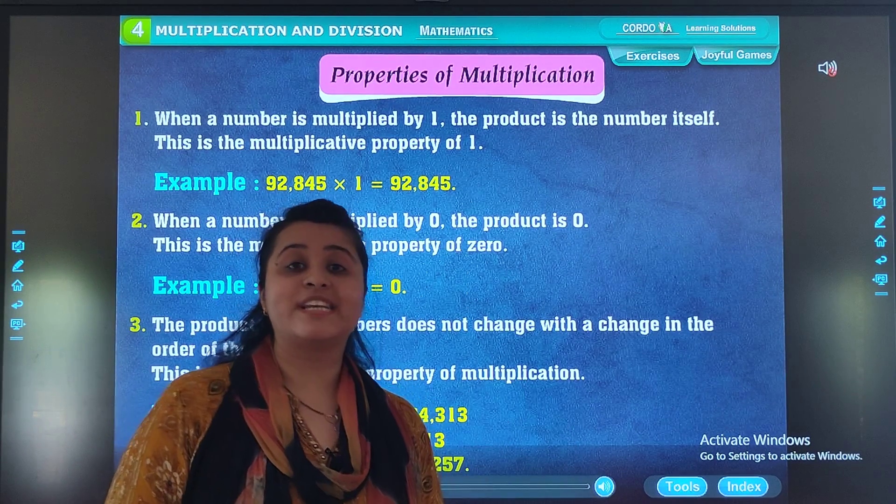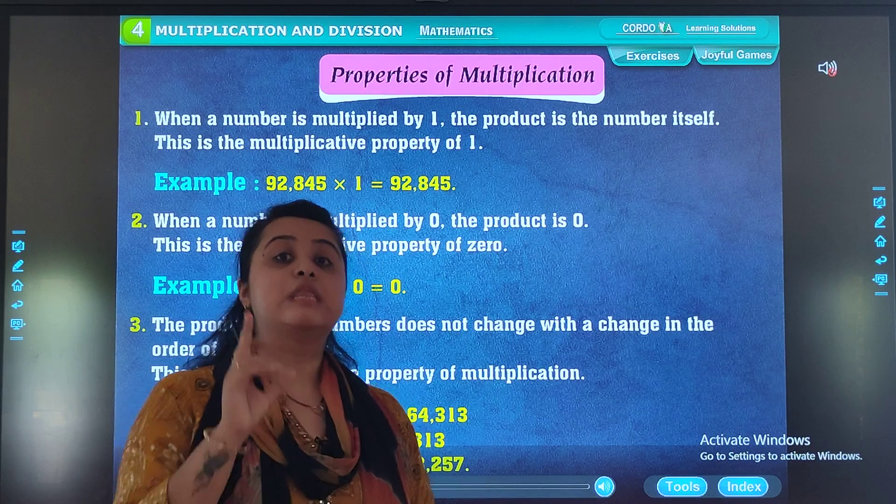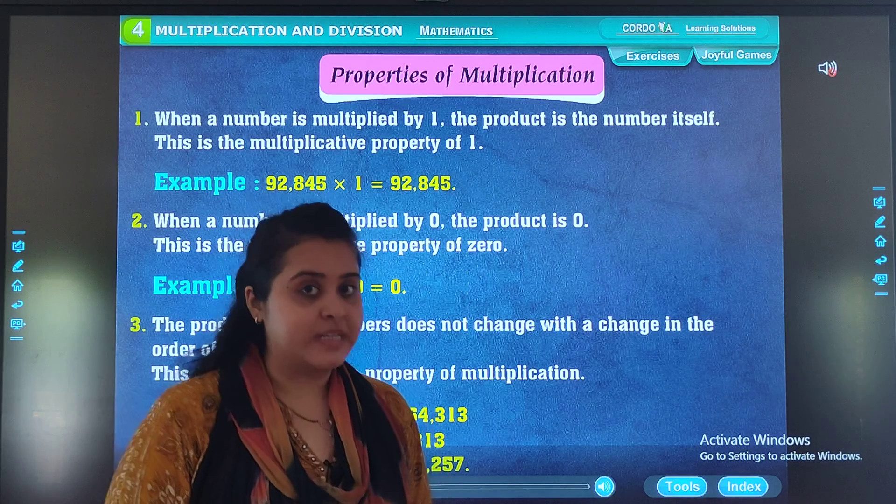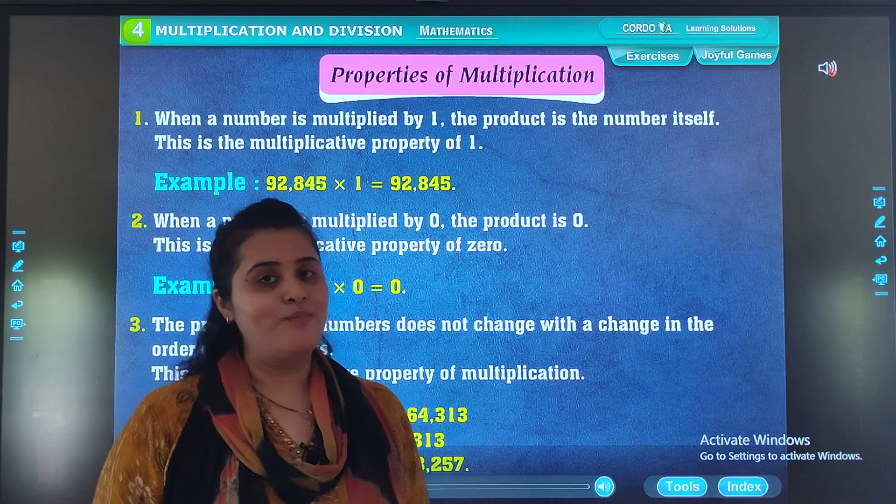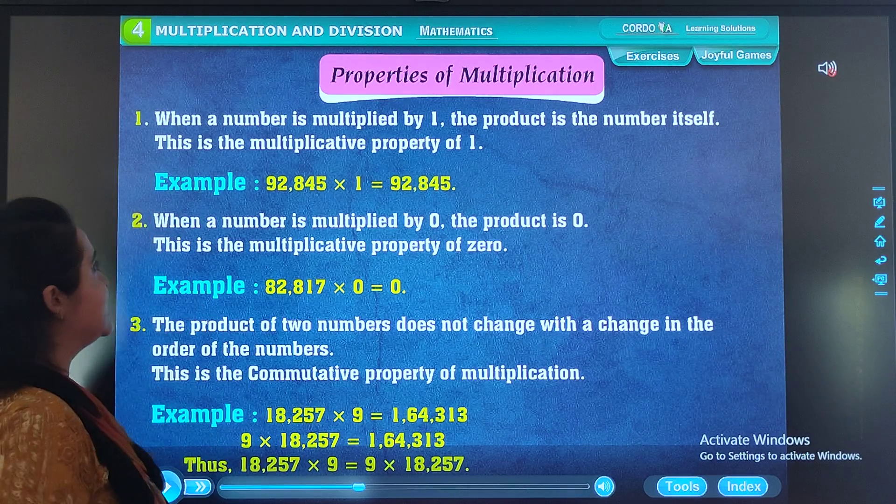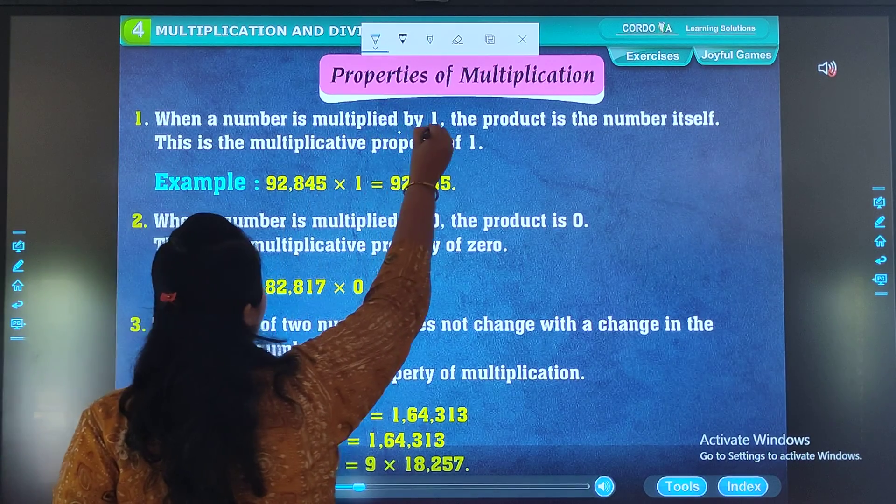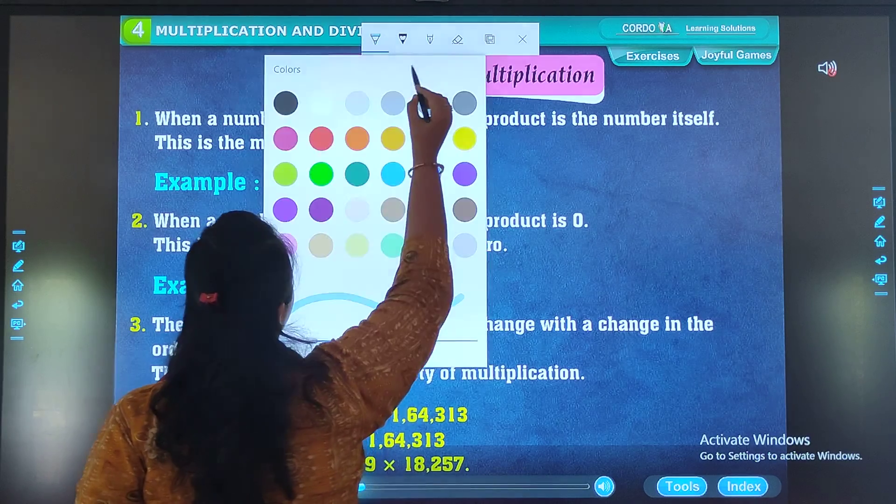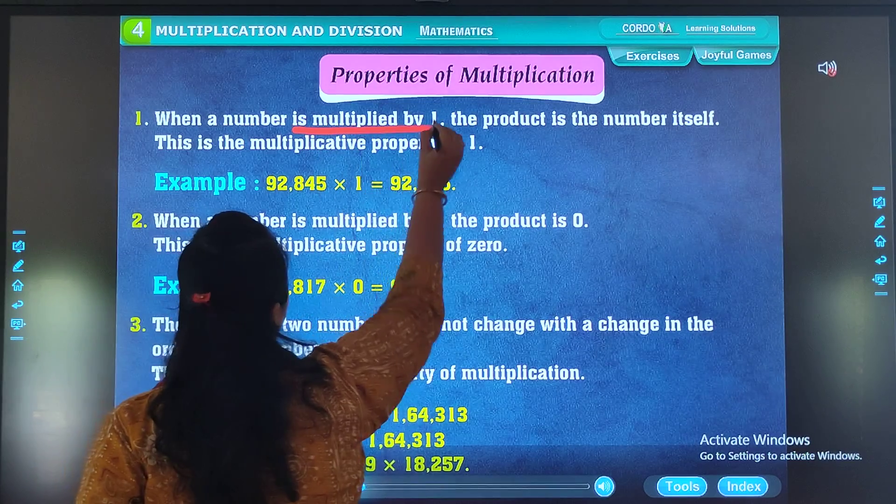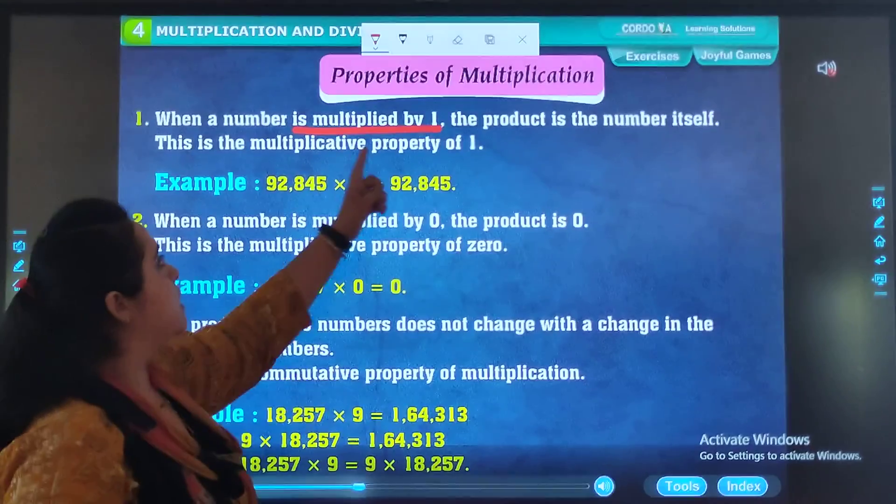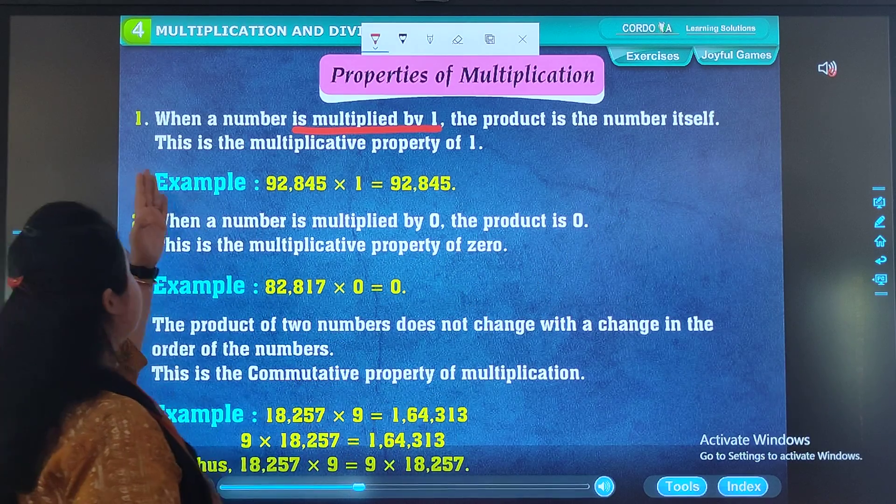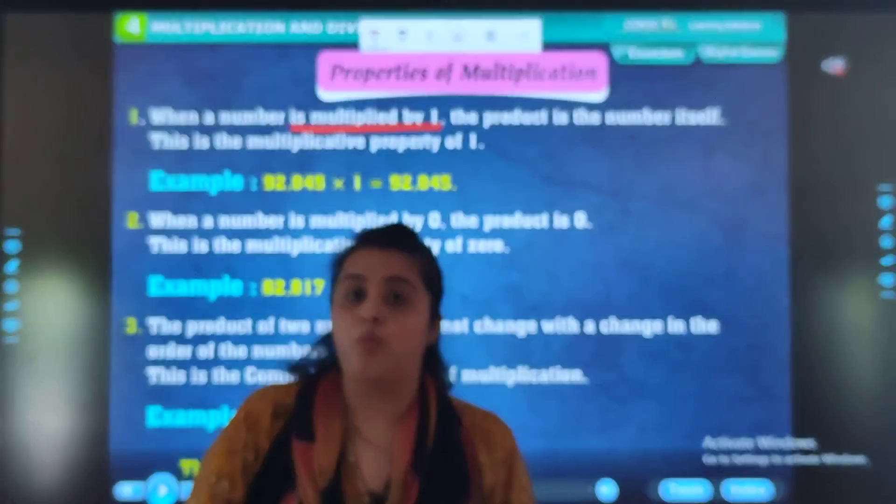So students, on page number 26 of your textbooks, there is a topic that is properties of multiplication. We will be discussing four parts of property. Let's start. The first property is when the number is multiplied by 1. The product is the number itself. This is the multiplicative property of 1.